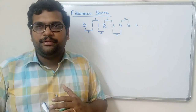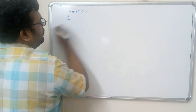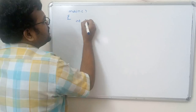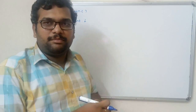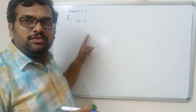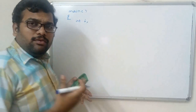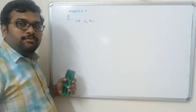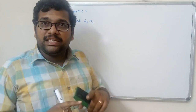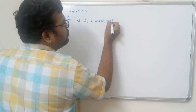Let us write the main function. We need a loop variable because we will solve this using an iterative statement. We declare i as the loop variable, n as the input for the number of elements, and initialize the first element a equal to 0 and the second element b equal to 1.